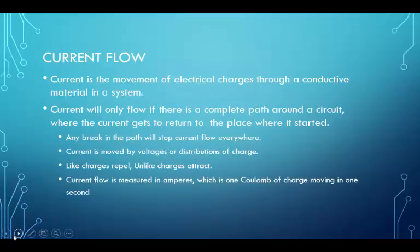Current. Current flow. Current is the movement of electrical charges through a conductive material in a system. It will only flow if there's a complete path. If there's any break in the system and the current cannot get back to where it started, current will not flow. Current is moved by voltages or an uneven distribution of charges. And remember that from fundamental physics, like charges repel and unlike charges attract.